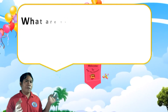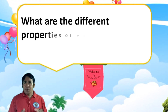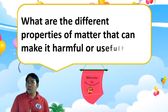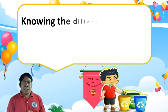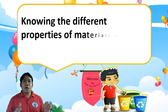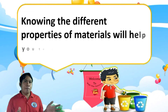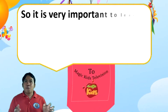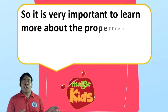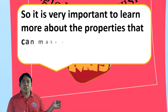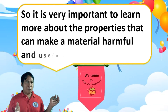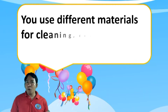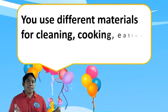What are the different properties of matter that can make it harmful or useful? Knowing the different properties of materials will help you to minimize waste, so it is very important to learn more about these properties. We use different materials for cleaning, cooking, heating, and repairing.